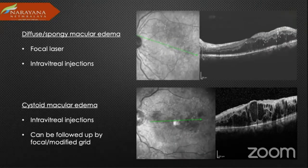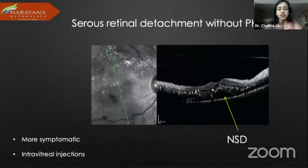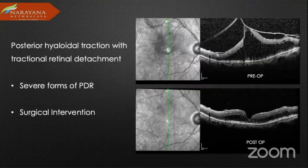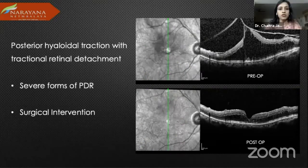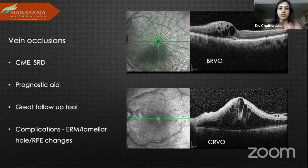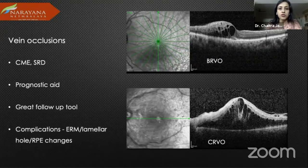We have the diffuse type, the CME, the serous retinal detachment, and the tractional type. This example shows pre- and post-treatment where you can see resolution of the traction with good vision improvement. In severe forms of PDR, you can also see a tractional component. For vein occlusion, you can assess whether there is cystoid macular edema or subretinal fluid — again a prognostic aid for follow-up and to see whether there are any complications.